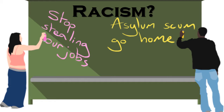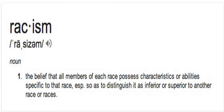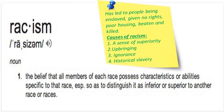Racism has been one of the causes of inequality around the world, and the issue of immigrants or people who come from other countries to work is one that still divides people. Racism basically means distinguishing someone as inferior or superior based on race. This has led to people being enslaved, given no rights, poor housing, beaten and killed, and denied education. Some causes of racism include a sense of superiority, being brought up in an environment that suggests you're better than others, and ignorance.